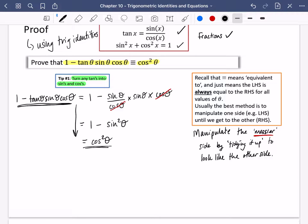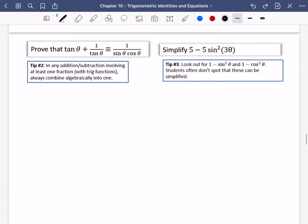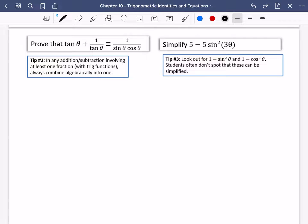I have said that 1 minus tan θ sin θ cos θ is equal to cos squared θ. And notice how I've just gone down here and I've left this side completely blank because that's the only thing I was working on. Okay, let's try another one. This time I am going to prove that tan θ plus 1 over tan θ is always equal to 1 over sin θ cos θ.